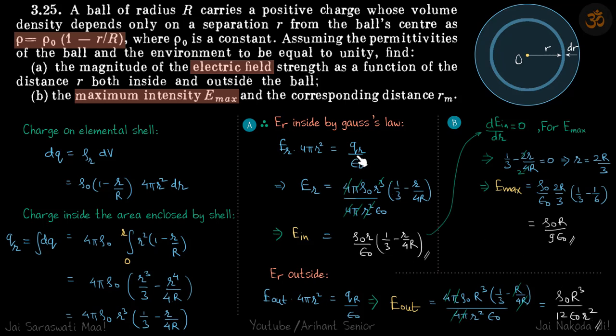So remember here when we used Gauss's law, it was 4 pi r squared is equal to q_r by epsilon naught. But here it is q_R by epsilon naught because for outside q enclosed is all the charge inside the sphere. But here it was only up to the distance r.